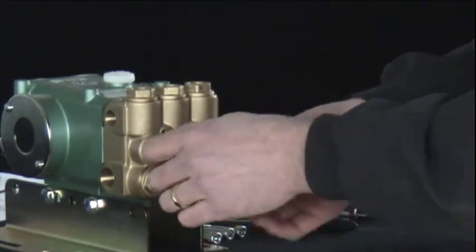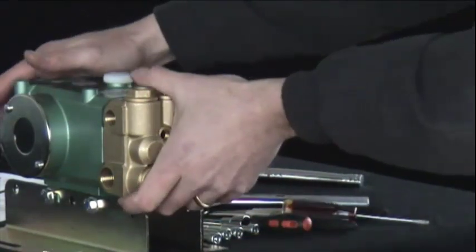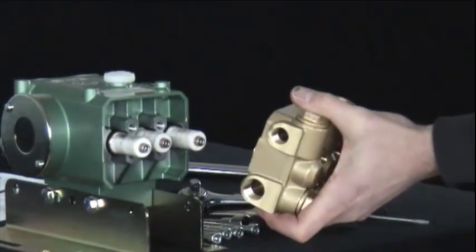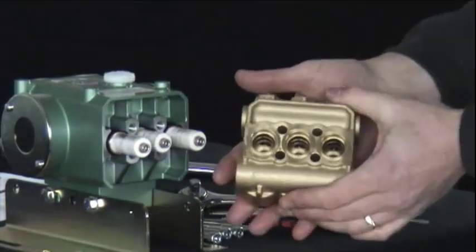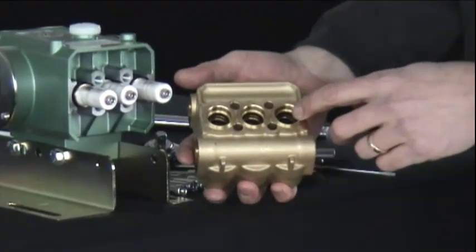Once these four bolts are removed, you're able to grasp the head of the pump and separate from the green case. Once the head is removed, you can access the seal assemblies.